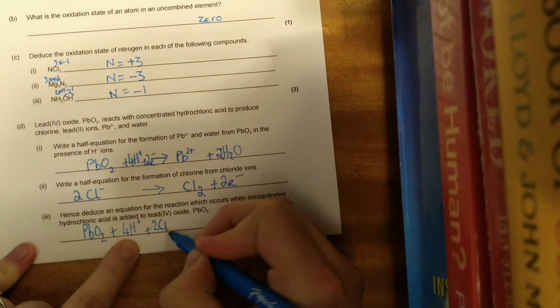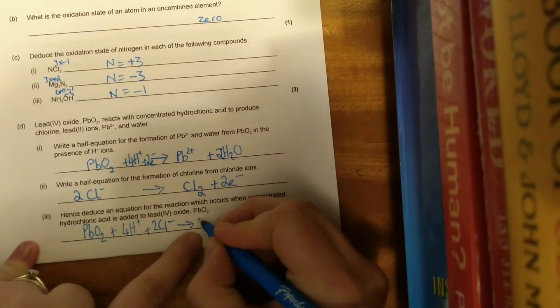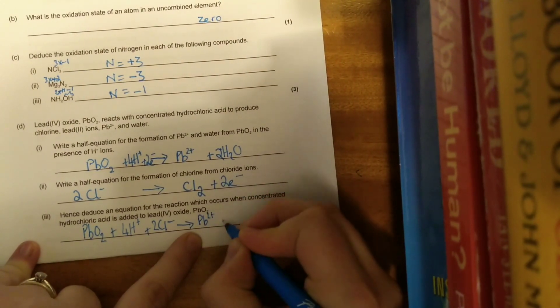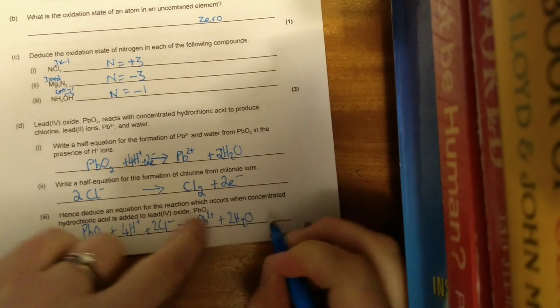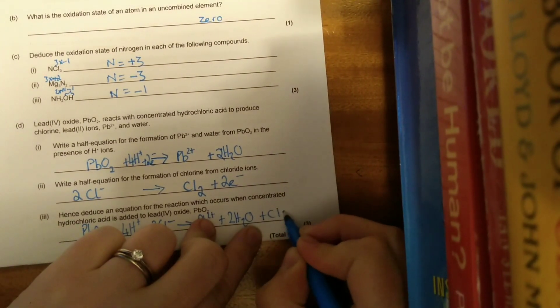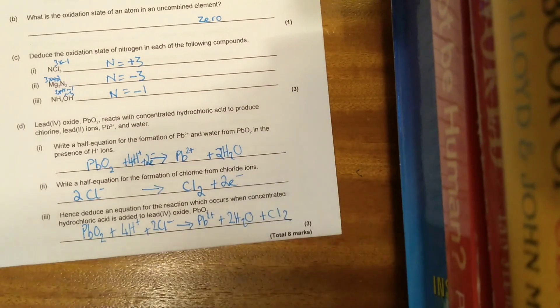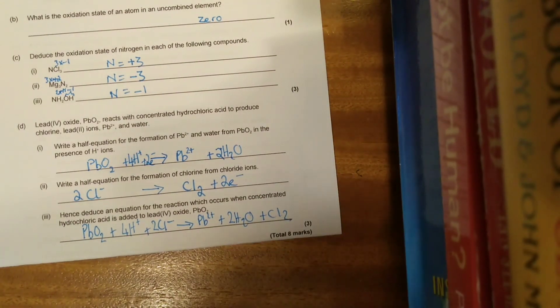And then lastly, we're asked to deduce the equation for the reaction that's occurred. We're looking to combine these half equations. Double check they've got the same number of electrons which are going to be cancelling out. So we've got PbO2 plus 4H+ plus 2Cl- goes to Pb2+ plus 2H2O plus Cl2. And that should hopefully be 8 out of 8.